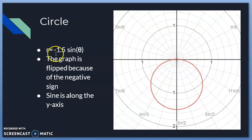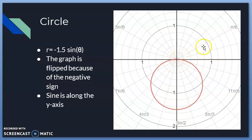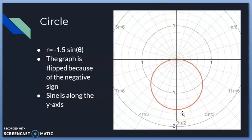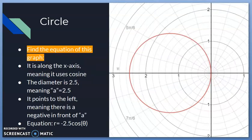Here we have a sine circle: r = −1.5·sinθ. The diameter is 1.5. Normally a sine circle graph would be in the upper region, but since there's a negative it goes downward. Sine is along the y-axis — it's symmetrical to the y-axis.